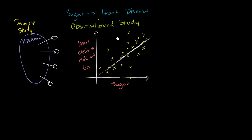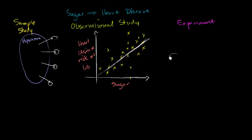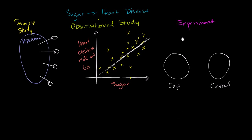Now you're probably saying, all right, how could you prove — or feel better about the idea — that sugar is actually a cause, that there's actually causality there? Well, to do that, you would actually have to run an experiment. And to do an experimental study here, what you would do is try to take two groups of folks. You would have your experimental group — a pool of people, let's say 100 people in the experimental pool — and then you have your control group.